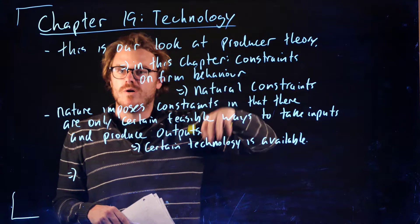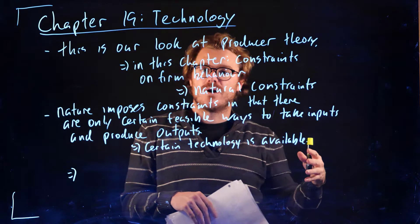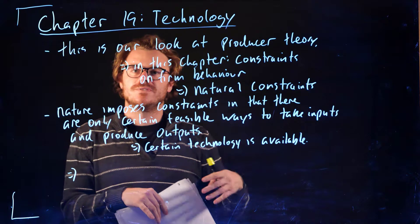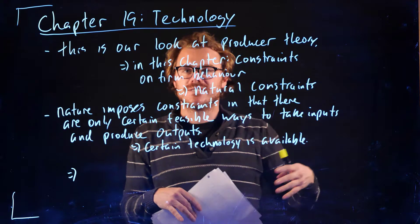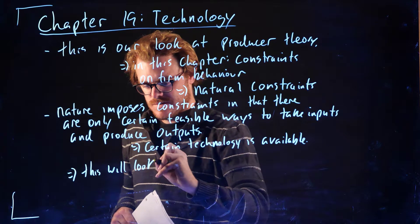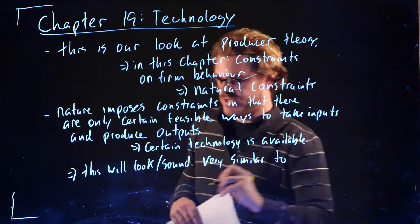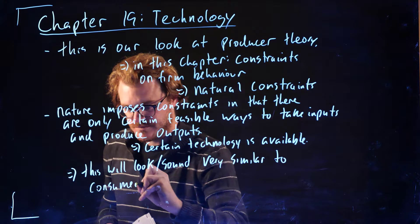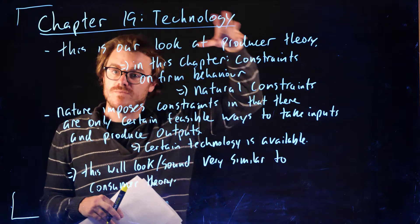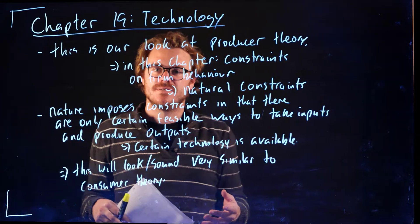This chapter is going to look really similar to the consumer theory stuff we were learning before - just kind of slightly different language. We're going to look at things that are kind of like indifference curves and eventually things that are kind of like a budget set. This will look and maybe sound very similar to consumer theory. There's going to be lots of parallels between what we studied so far this semester and what we're going to see in producer theory - maximizing utility might be minimizing costs, that kind of thing.